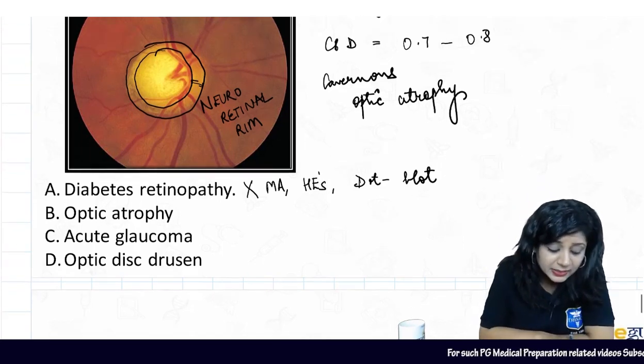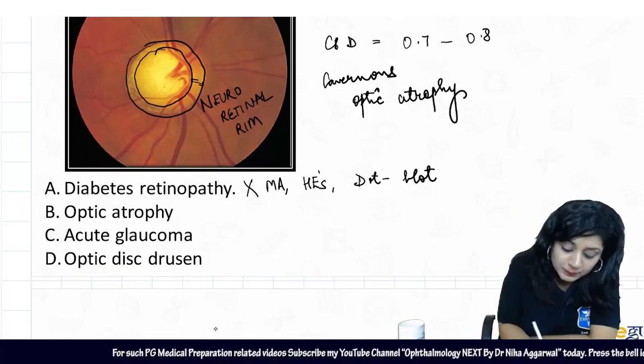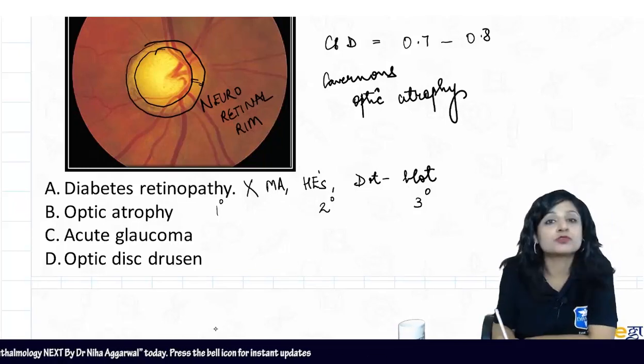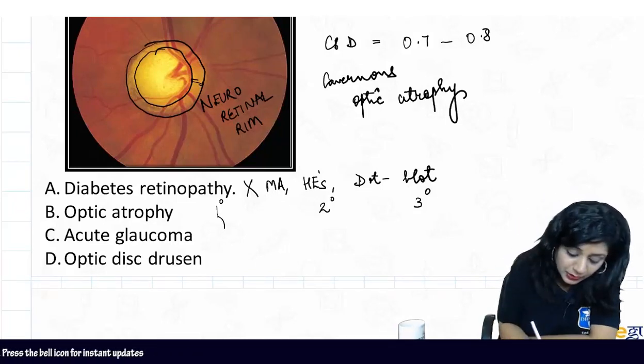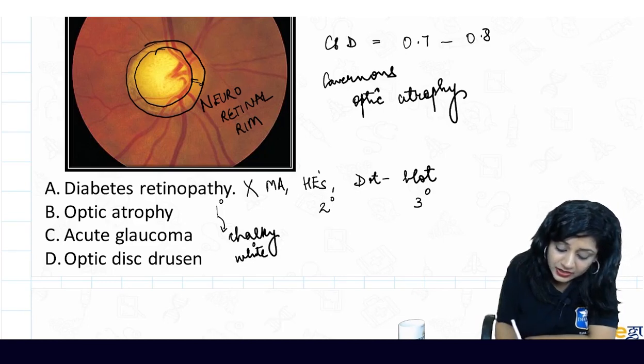Option B is optic atrophy. If I have optic atrophy, it could be primary, secondary, or tertiary. What are the colors? In primary optic atrophy, I will have chalky white color. In secondary, it is dirty white color.